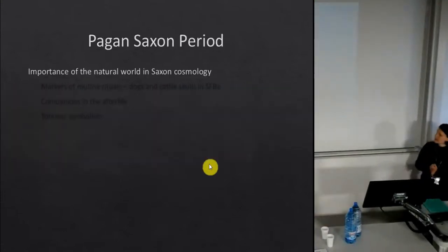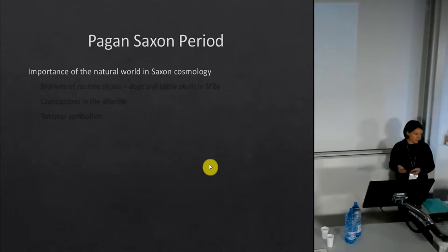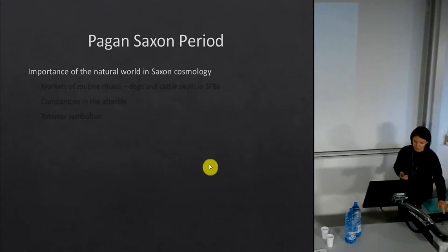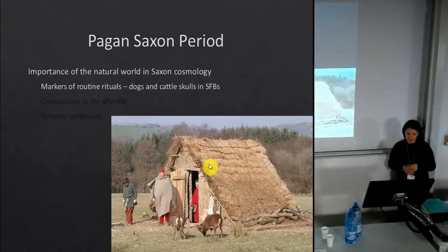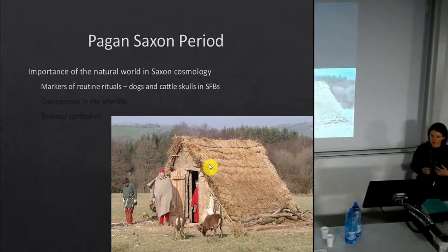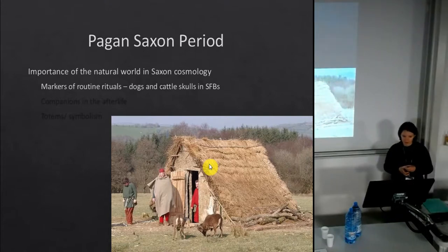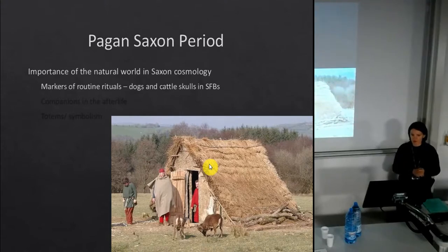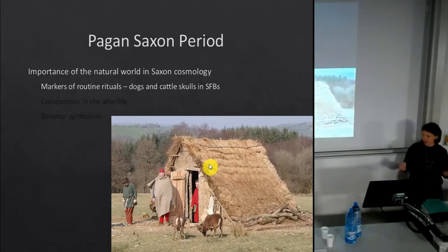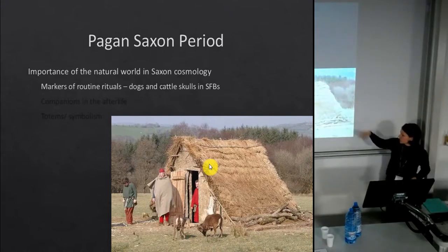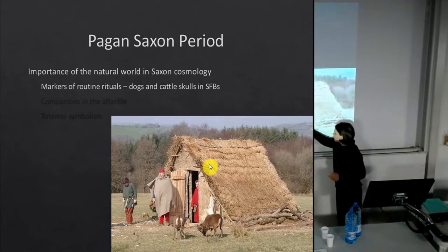Starting with the pagan Saxon period: it's quite clear there's an importance of the natural world in Saxon cosmology, with a lot of natural symbolism in their artwork. In the zooarchaeological record, animals are used as markers of routine rituals, represented by the finding of dog and cattle skulls in sunken feature buildings — SFBs. This is a reconstruction of a sunken feature building: a hut with a pit underneath the floor, quite easily identifiable in archaeology.